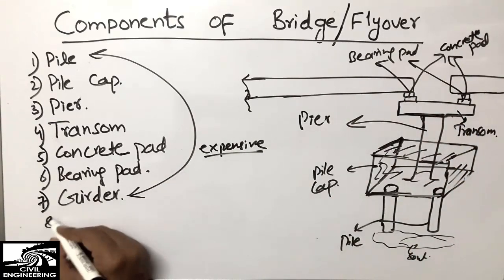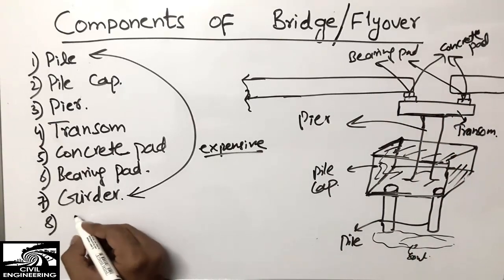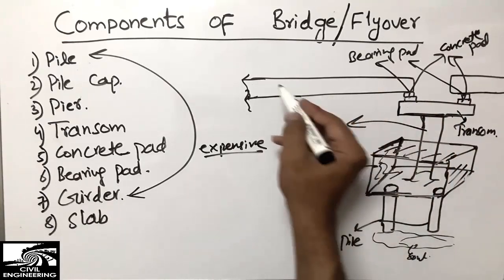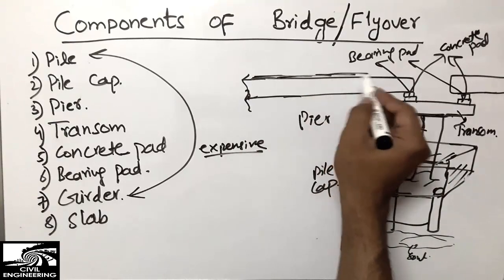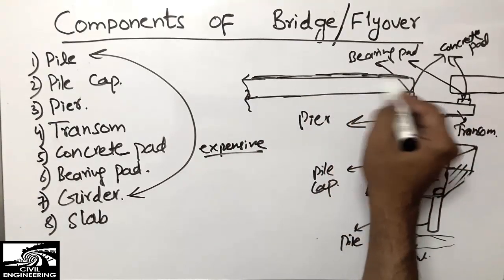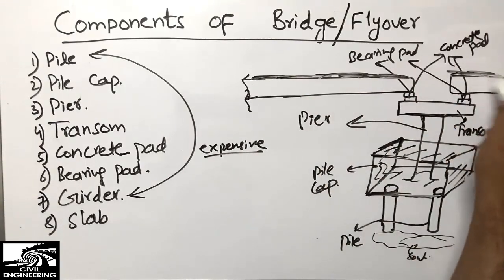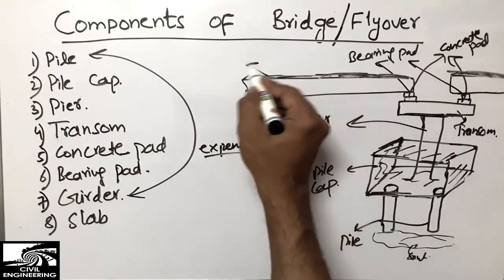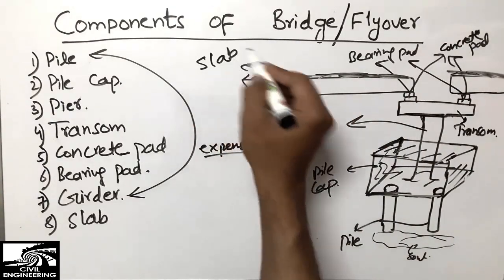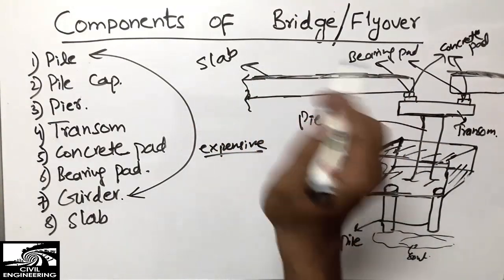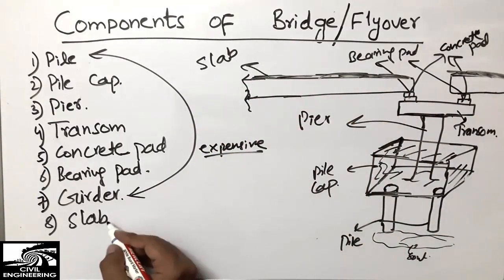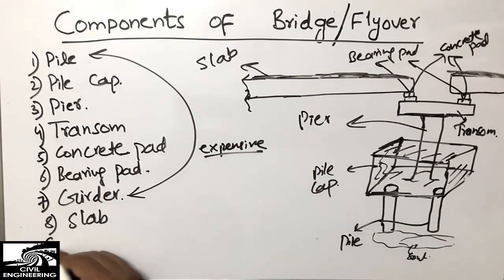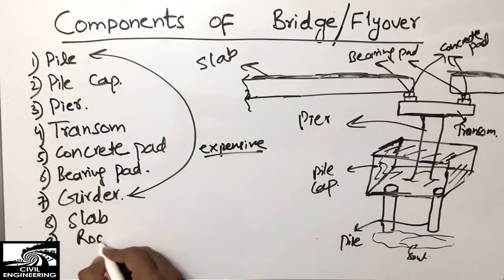After the girder, we place the slab reinforcement and pour the slab on top of the girder. We put the slab reinforcement in the concrete to form the slab. Above the slab, we place the road pavement.